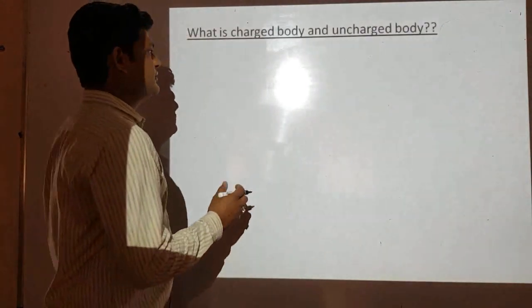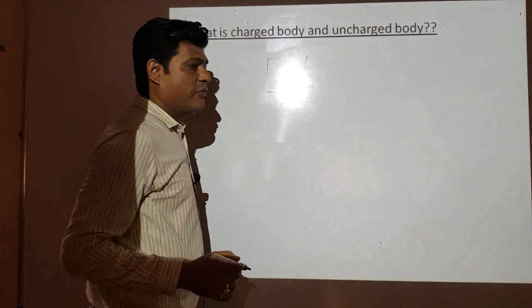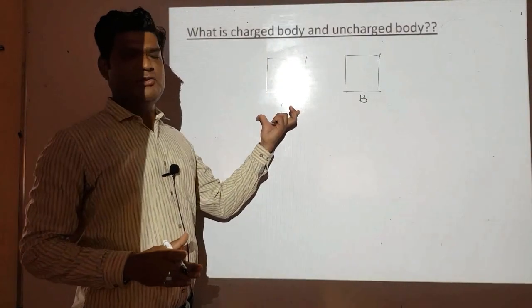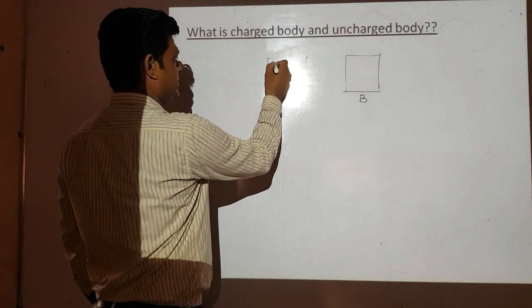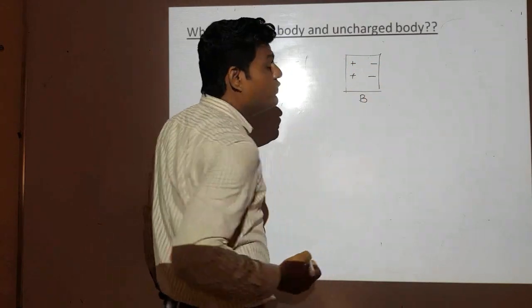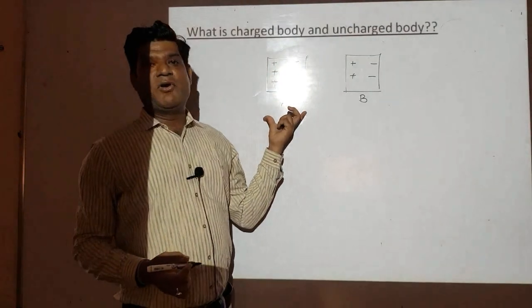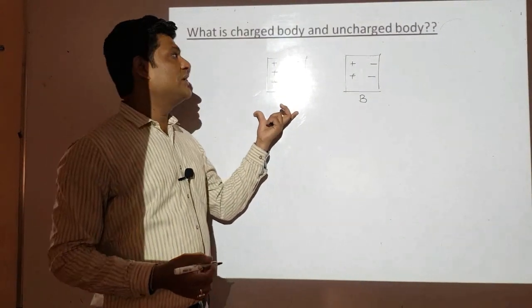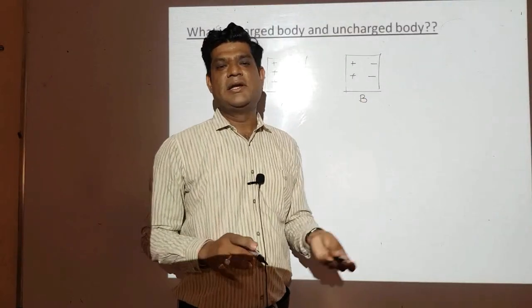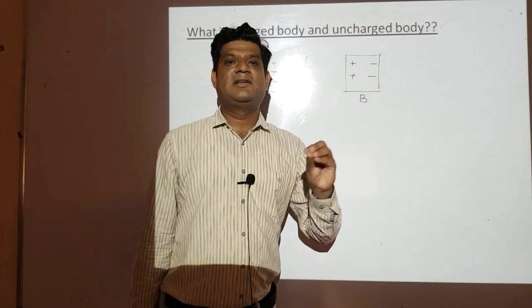Consider two bodies, body A and body B, placed on insulating stands. Body A has three positive charges and three negative charges. Body B has two positive charges and two negative charges. In both cases, the number of positive charges and negative charges are the same. That is why these bodies are known as neutral, uncharged, or chargeless bodies.